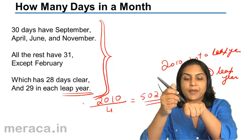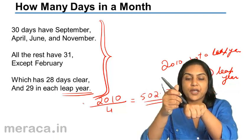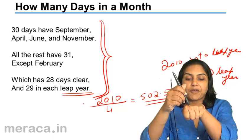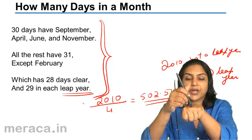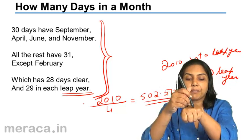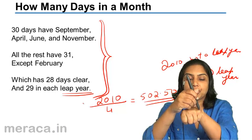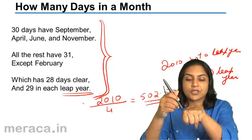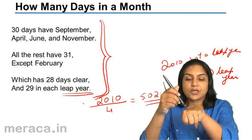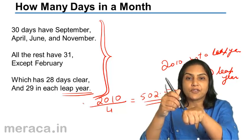Starting from the knuckles: January, February, March, April, May, June, July, August. So July and August both have 31 days, since they land on consecutive knuckles.